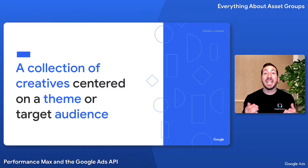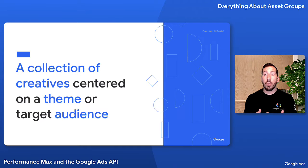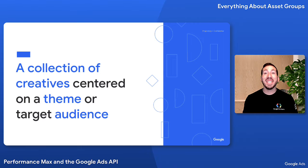An asset group is a collection of creatives called assets centered on a theme or related to a target audience in a Performance Max campaign. Each Pmax campaign must have between one and a hundred asset groups.